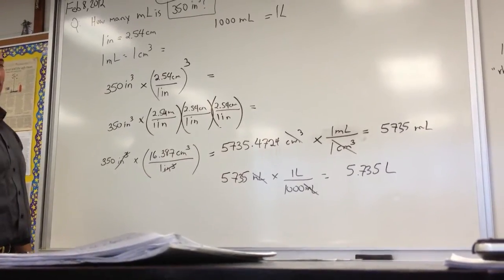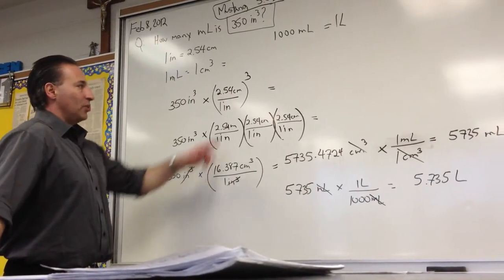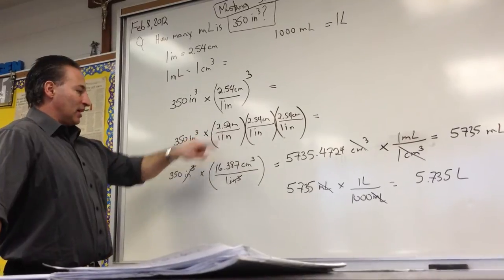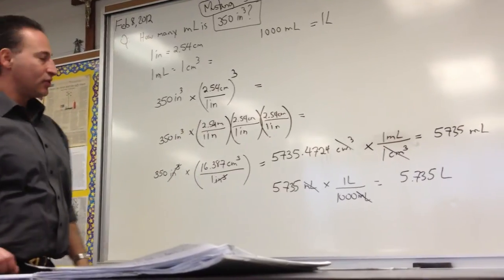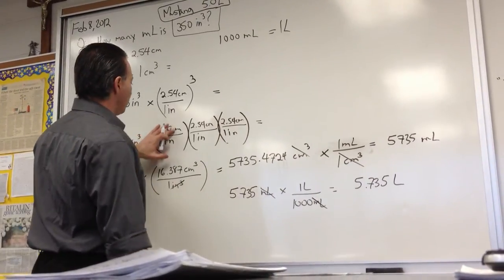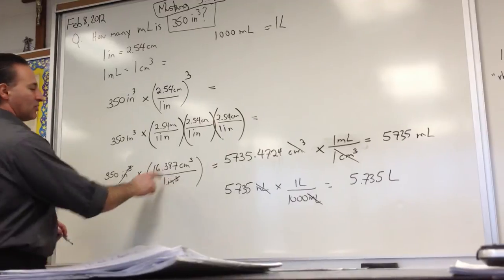So if we're dealing in volume, which is a three-dimensional entity, we need to raise that conversion factor to the power of 3. And that's the equivalent of writing that conversion factor three times. So 2.54 times 2.54 times 2.54 is going to give you 16.387.